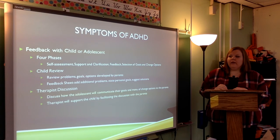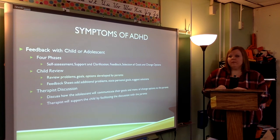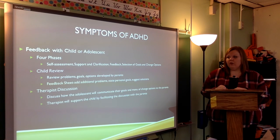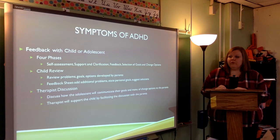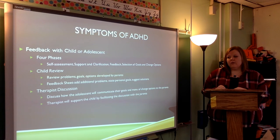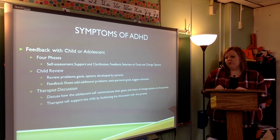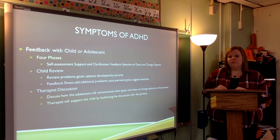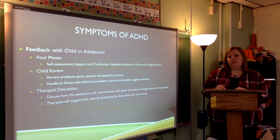For feedback with the child or adolescent, there are four phases: self-assessment, support and clarification, feedback, and selection of goals and change options. The child review involves reviewing problems, goals, and options developed by the parents, and a feedback sheet with additional problems where personal goals and suggested solutions are stated. In the discussion with the therapist, you discuss how the adolescent will communicate their goals and the menu of change options to the parents, and the therapist supports the child by facilitating that discussion with the parent.